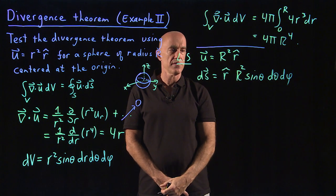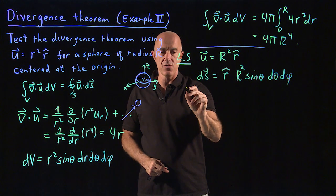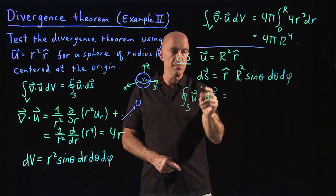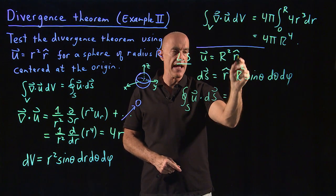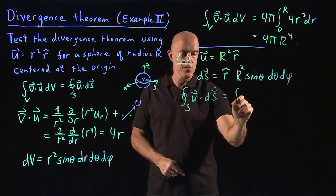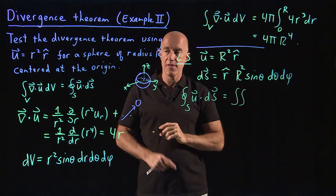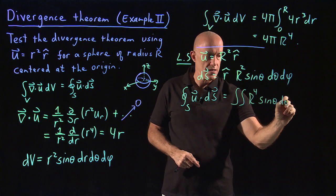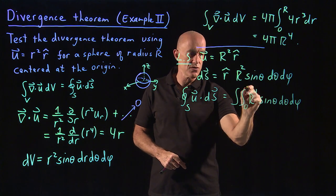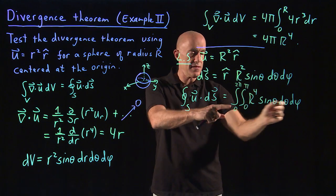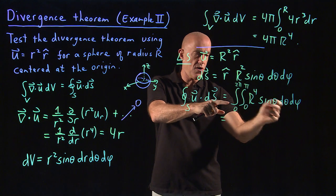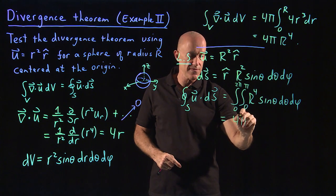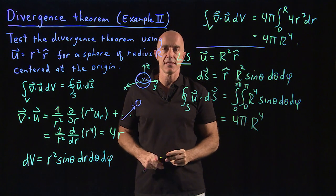Let's put this together. We have the integral over the sphere of u dot ds. So this will be u dot ds. The r hat dot r hat becomes one. So we have an R to the fourth. So we have an integral over the surface of R to the fourth sine theta dθ dφ. We're integrating theta from 0 to π, phi from 0 to 2π. Again, the integral over the angles of sine theta dθ dφ is 4π. And R to the fourth just comes out. So this gives us 4π times R to the fourth, which is the same.